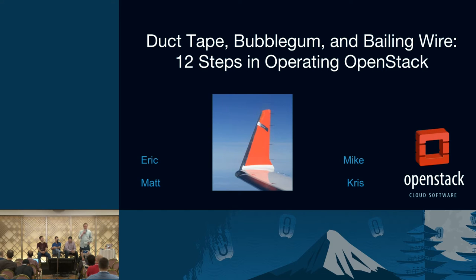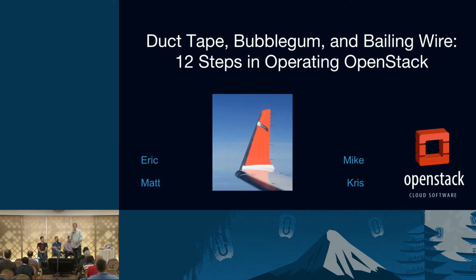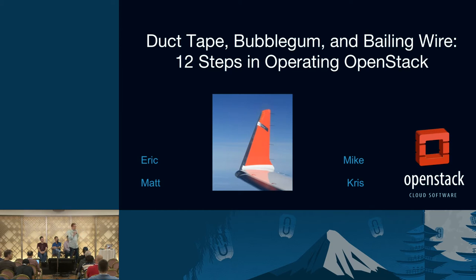As we get into our talk today, we're going to set some ground rules. The first part is we're going to talk about these 12 steps that we kind of adopt, and then we're going to talk about the different fixes that we use to keep OpenStack up and running. The second half, we're going to open the floor for audience participation. I encourage you, if something strikes a nerve, to come on up at the end and share your strange and interesting fixes.